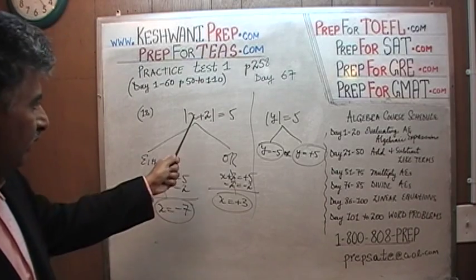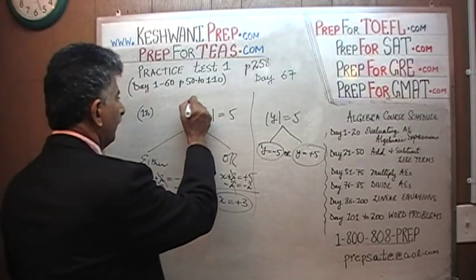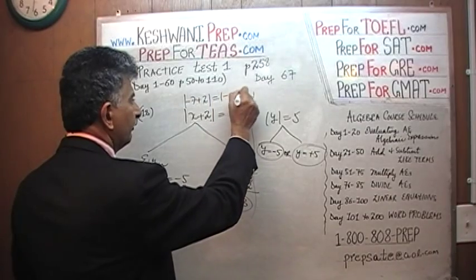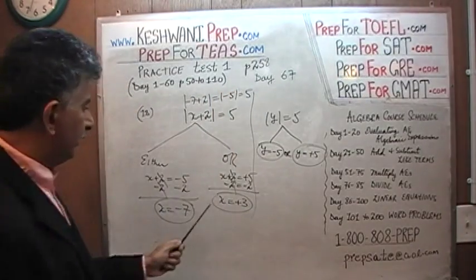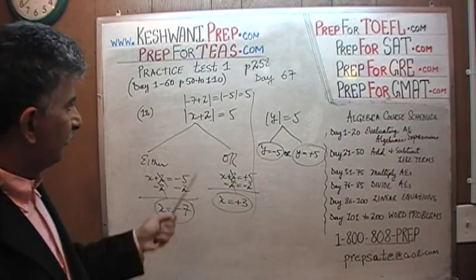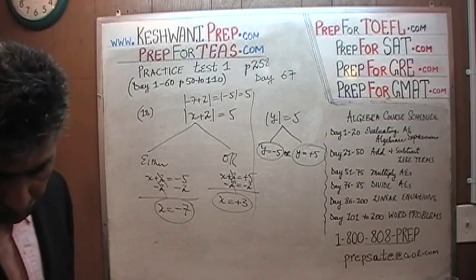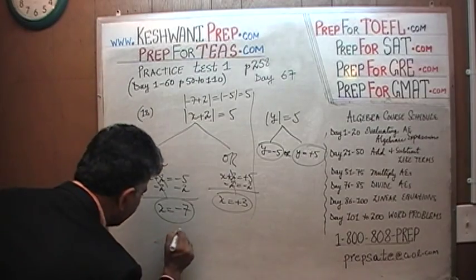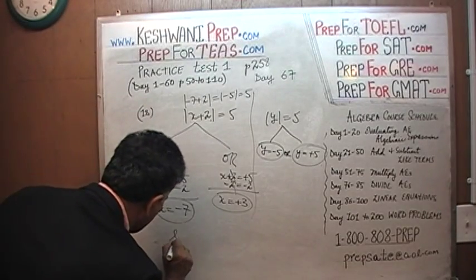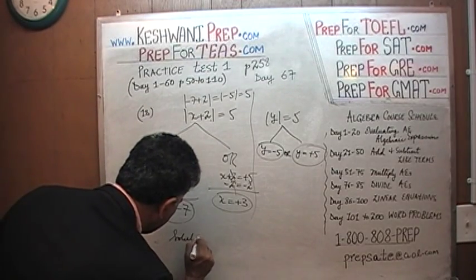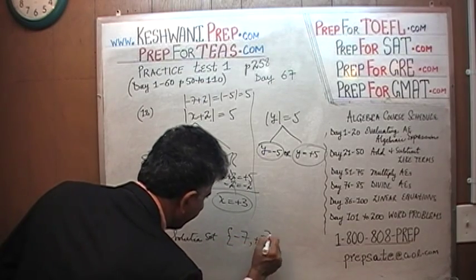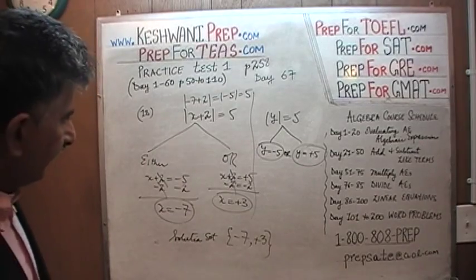If you put negative 7 in here, negative 7 and positive 2 will give a negative 5, and the absolute value of negative 5 is 5. Similarly, if you put in 3, we get 3 plus 2 is 5 and the absolute value of 5 is 5 — they both work. So the solution set consists of negative 7 and positive 3.